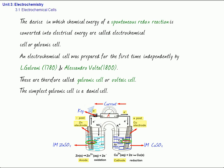The two solutions are connected by an inverted U-tube filled with an inert electrolyte in semi-solid form, and this is called a salt bridge. The salt bridge contains KCl, K2SO4, NH4NO3, etc., in semi-solid form such as agar or gel. The two openings of the salt bridge are plugged with a porous material such as glass wool or cotton so that the ions do not mix. This is the construction of the galvanic cell.